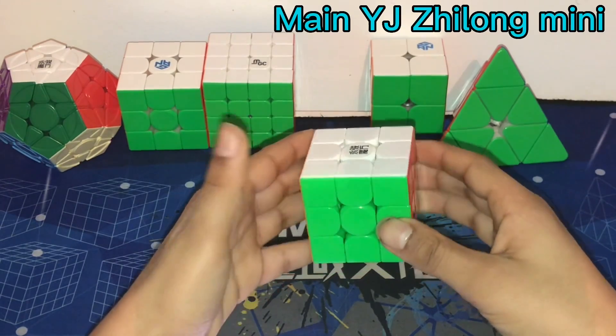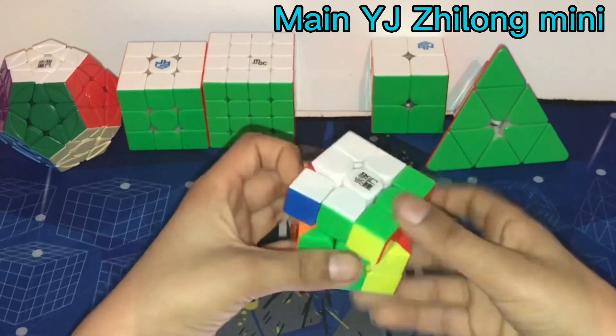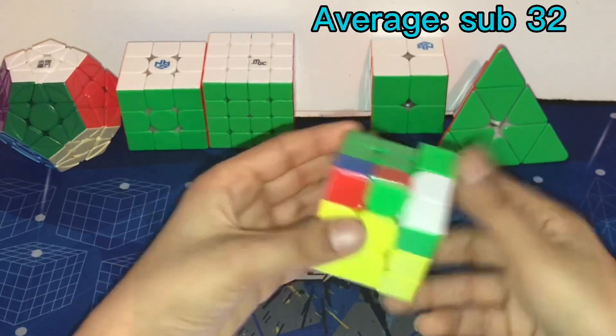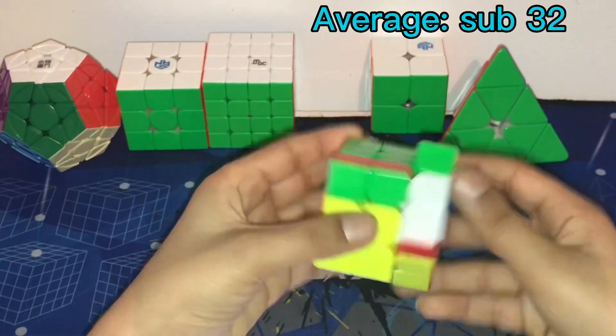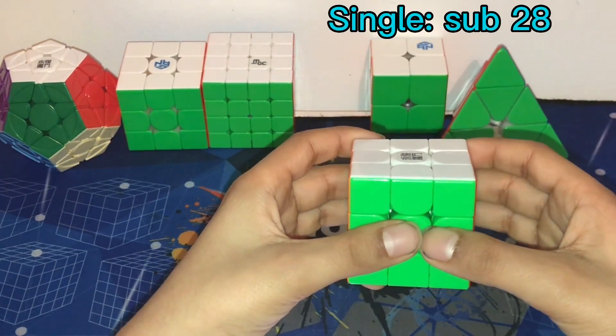Okay, now we'll talk about 3x3 OH. I'm going to main the YJ Z-Long Mini because I like its small size and speed. I hope to get a sub 32 average, which should be really easy. To be honest, it won't be surprising at all even if I get a sub 30 average. And I hope to get a sub 28 single.